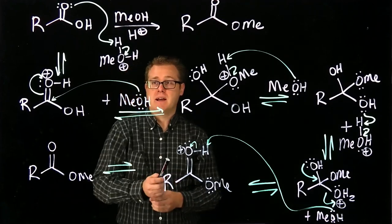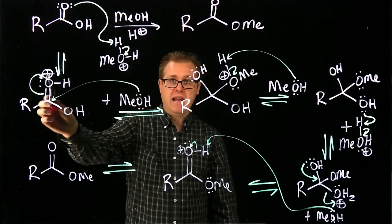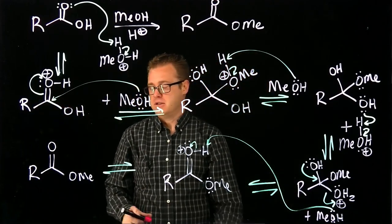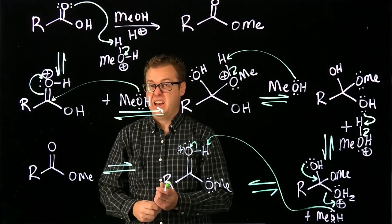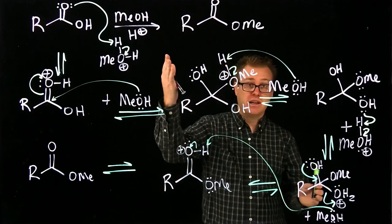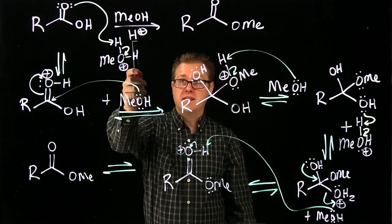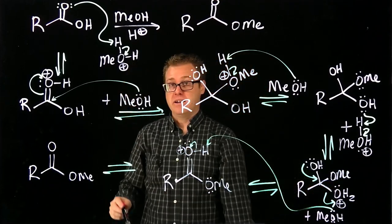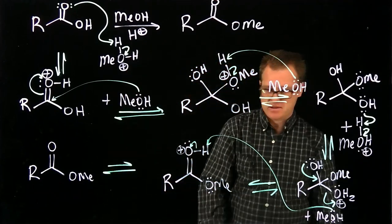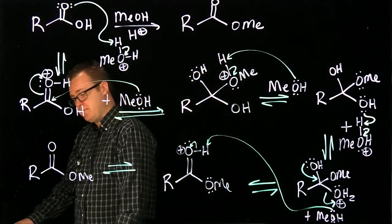Notice that we are under acidic conditions throughout — you don't see any anions or negative charges, because under acidic conditions you can only have neutral and positive species, and that's what we've shown in the mechanism.